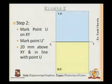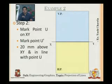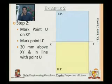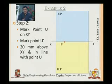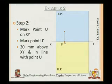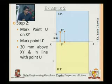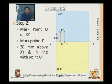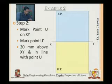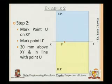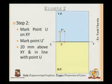Since it is in the first quadrant, HP is below XY and VP is above XY. We mark point U on XY because U is in VP. Then we mark U-dash 20mm above XY, in line with U. U is one end point of the top view and U-dash is one end point of the front view.